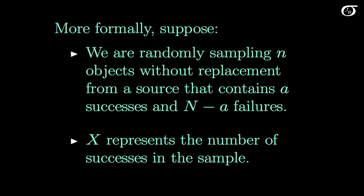Now we just thought it through a little bit in that calculation, but let's formalize this a bit. Suppose we are randomly sampling n objects without replacement from a source that contains a successes and N minus a failures. So there's capital N objects all together and there's only two types: the successes, and there's a of those, and the N minus a failures. And we're going to let the random variable X represent the number of successes in that sample.